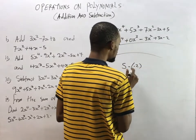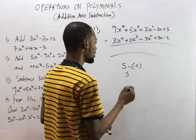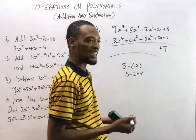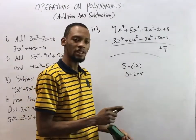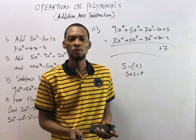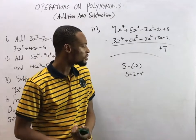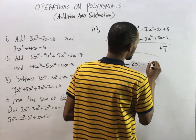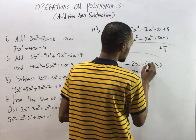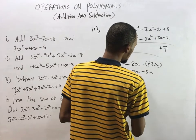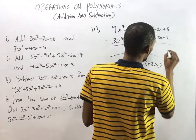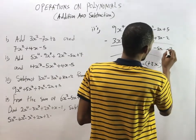This is where sign operations become critical. We have 5 minus (-2): minus minus becomes plus, so 5 + 2 = 7. If you don't know these basic operations, you'll just say 5 - 2 and get 3, which is wrong. You need to understand that minus times minus equals plus. I have a video on the introduction to mathematics basics covering these fundamentals. For the s terms: -2s minus (+3s) = -2s - 3s = -5s.